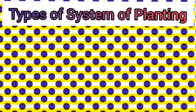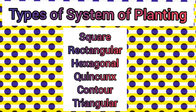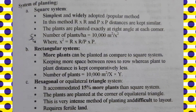The systems of planting are: square, rectangle, hexagonal, equilateral triangle system, quinquennus, contour system, and triangular system. Let's see them one by one.